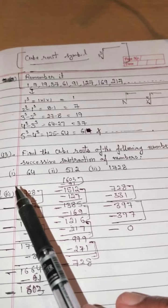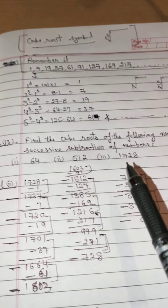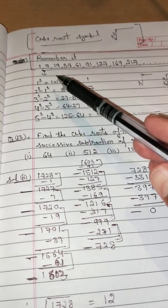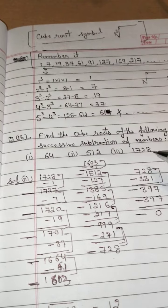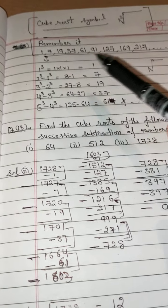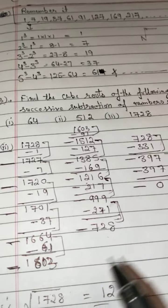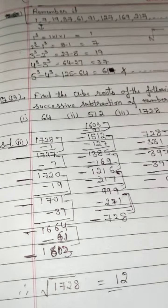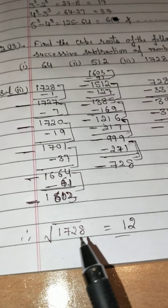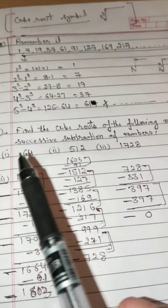Find the cube roots of the following numbers using successive subtraction. I have taken three parts: 64, 512, and 1728. I have solved the third part: 1728. Use the pattern — subtract 1, then 7, then 19, then 37, and so on, going on subtracting these numbers until your remainder becomes 0. Count how many steps there are. There are 12 steps. Therefore, the cube root of 1728 = 12.